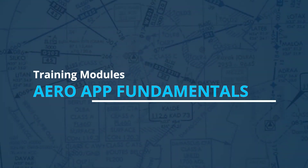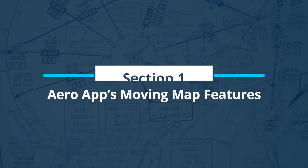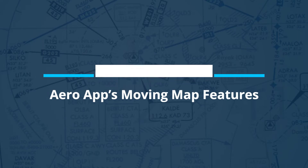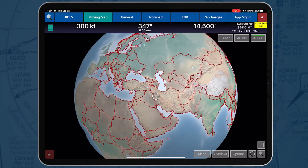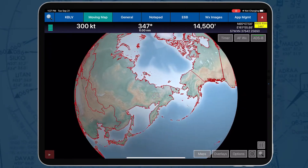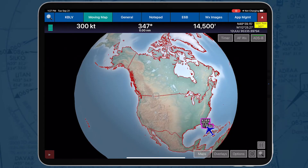Hello everyone, welcome to the AeroApp Fundamentals training modules. This training module will show AeroApp's Moving Map features. AeroApp's Moving Map is a high-performance, worldwide map that enables pilots to configure its display by enabling or disabling overlays.